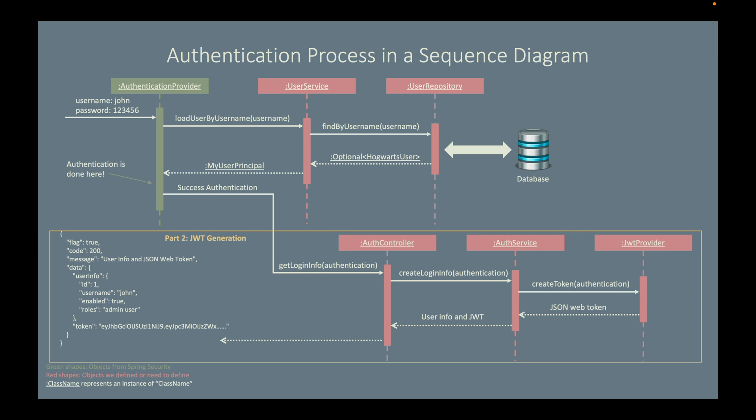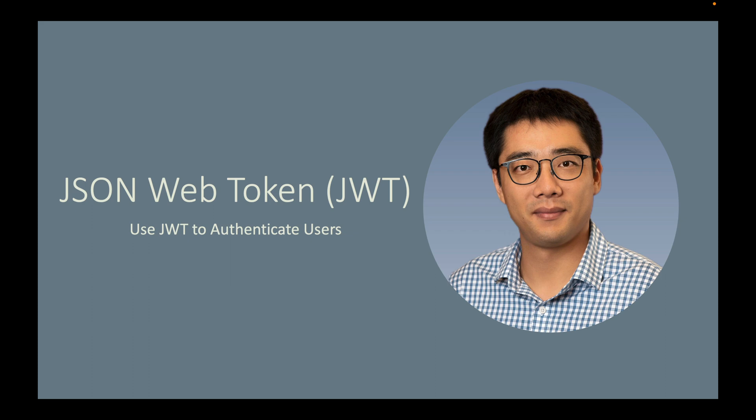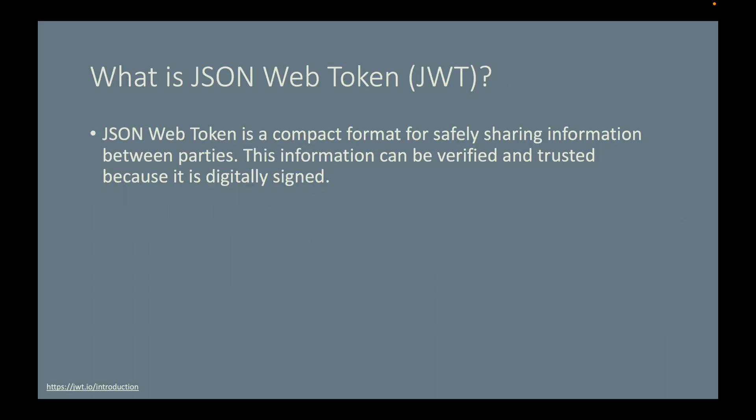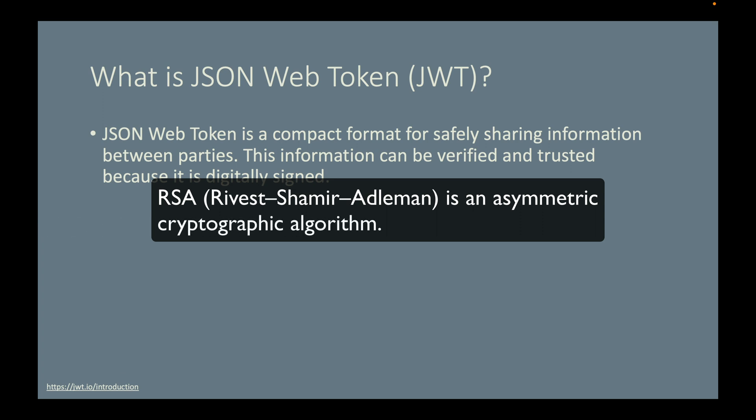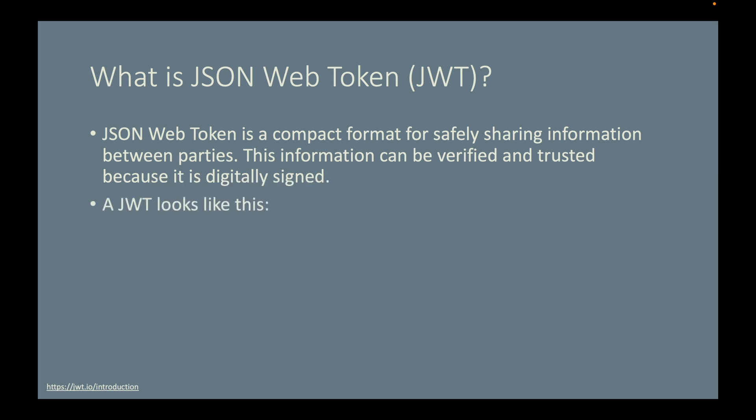Before we move on, let's talk about what JWT is and why it is popular. JSON web token, or JWT, is a compact format for safely sharing information between parties. You don't have to worry about the information in a JWT being modified during transmission, since it can be verified and trusted because it is digitally signed. JWTs can be signed using either a secret or a public-private key pair using RSA. In this project, we will use a public-private key pair to digitally sign our JWT.